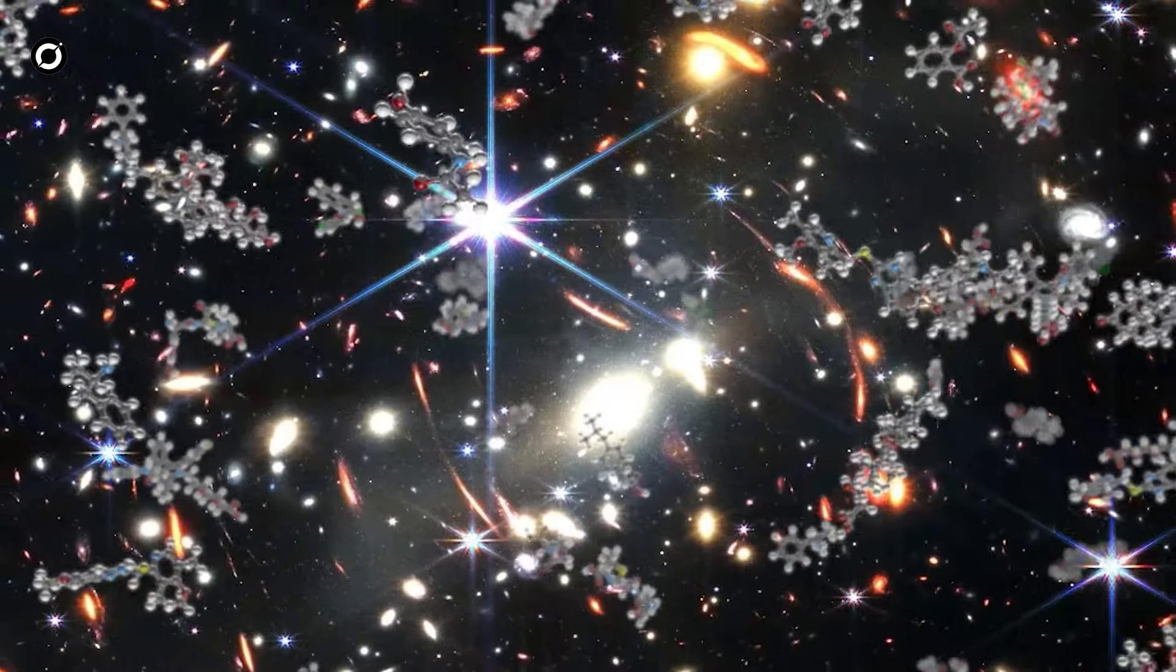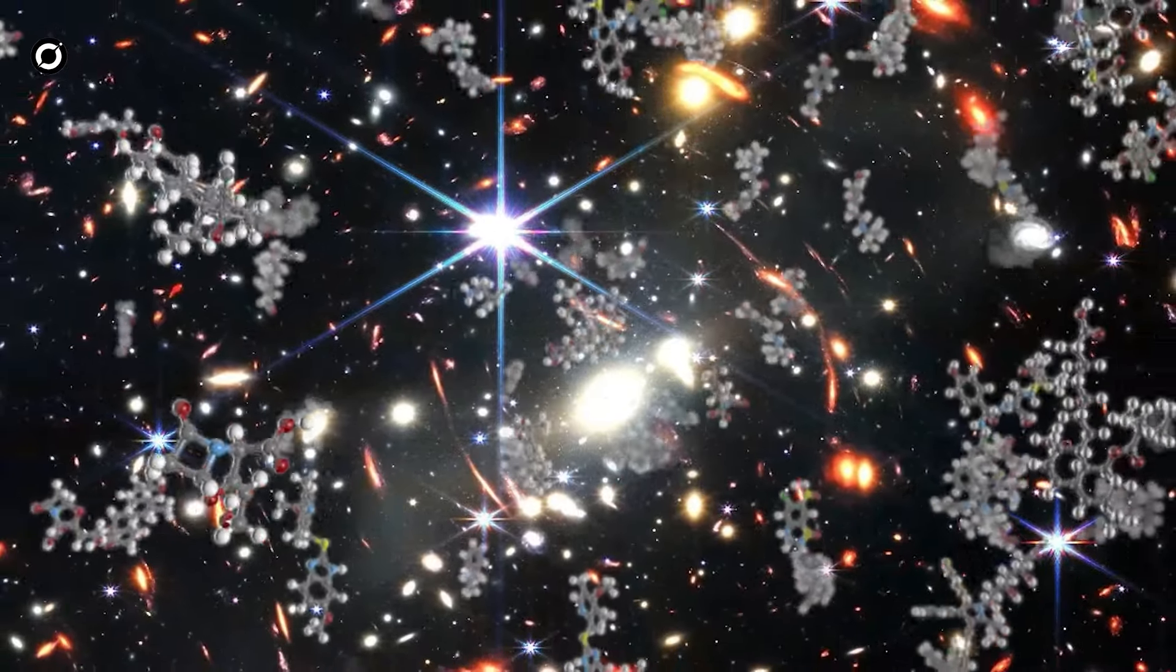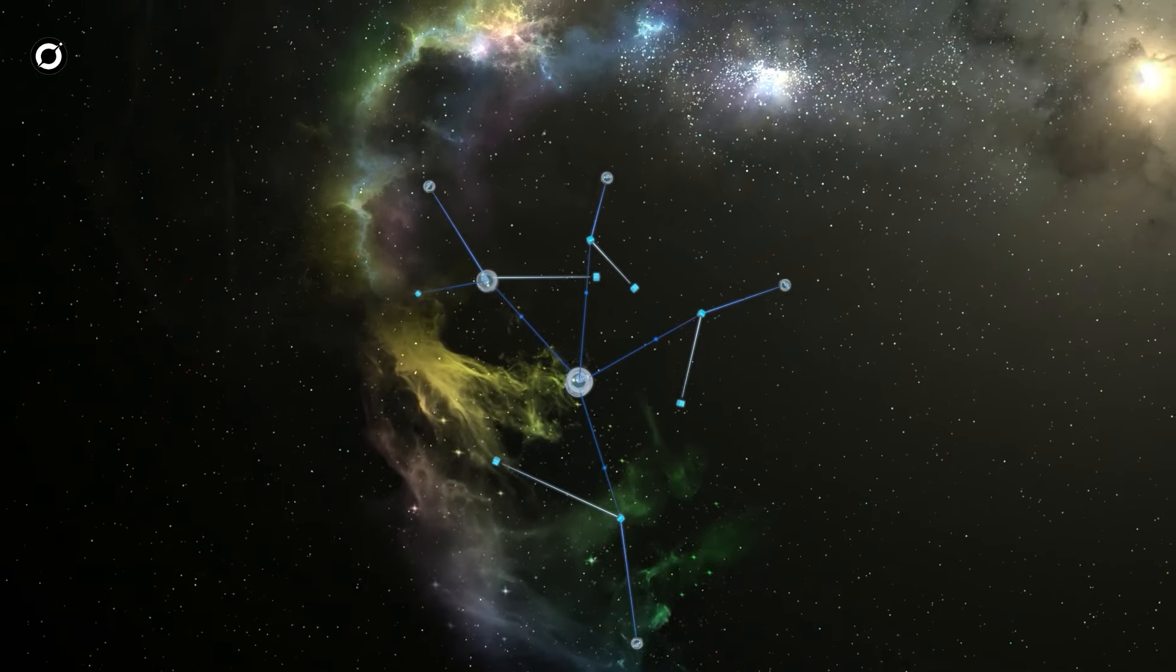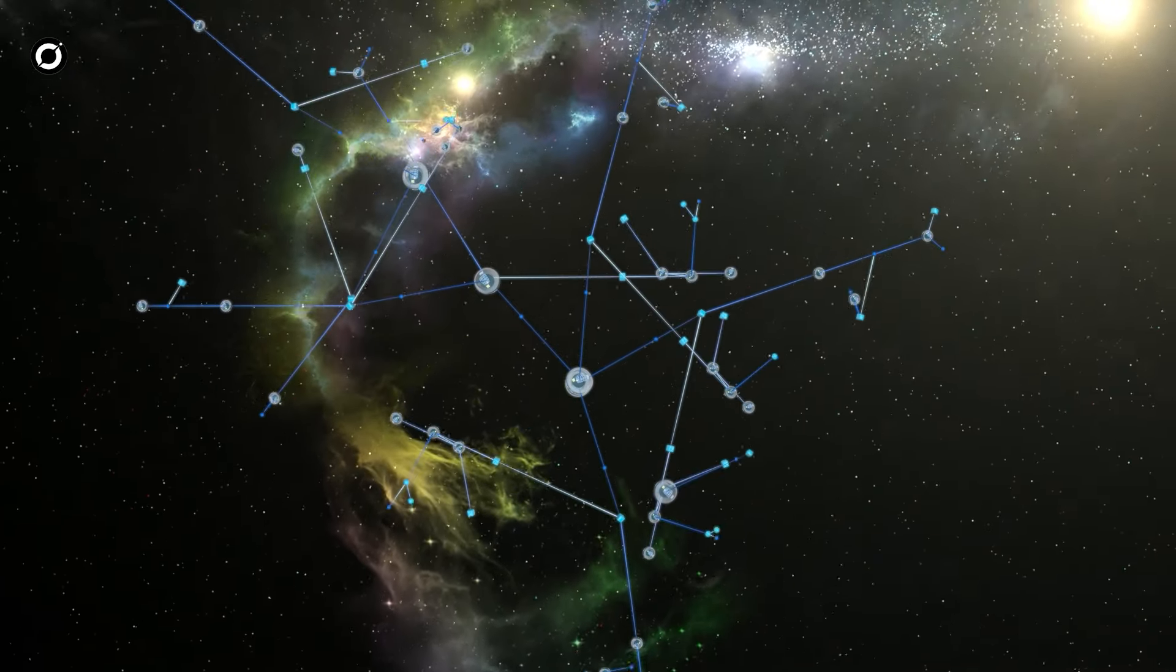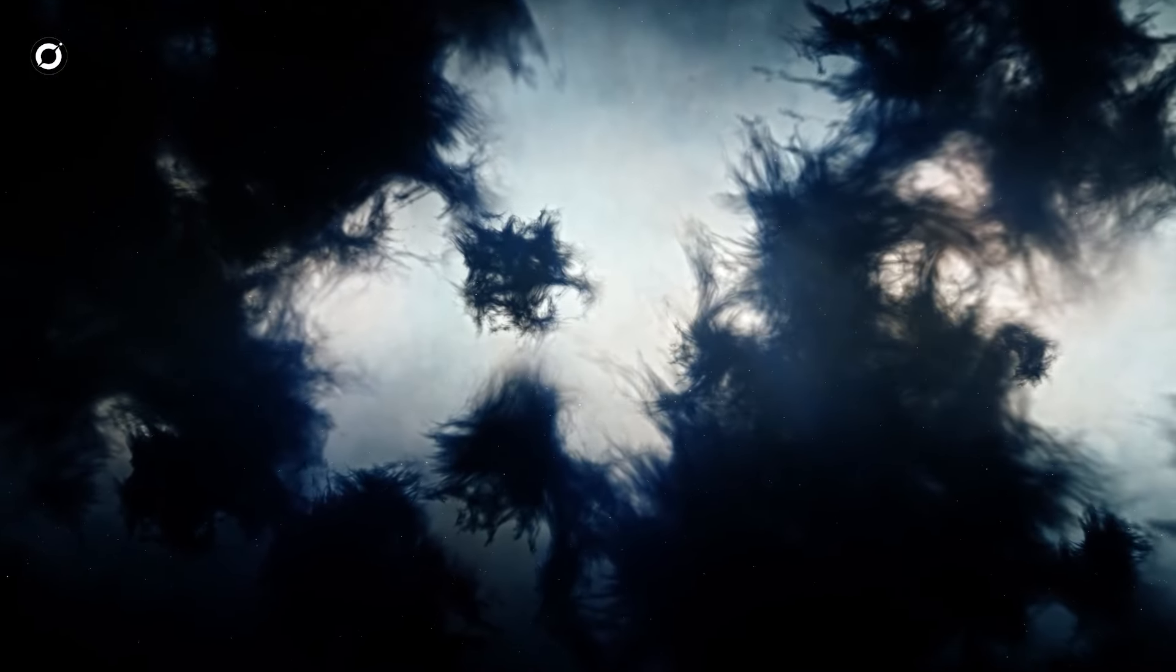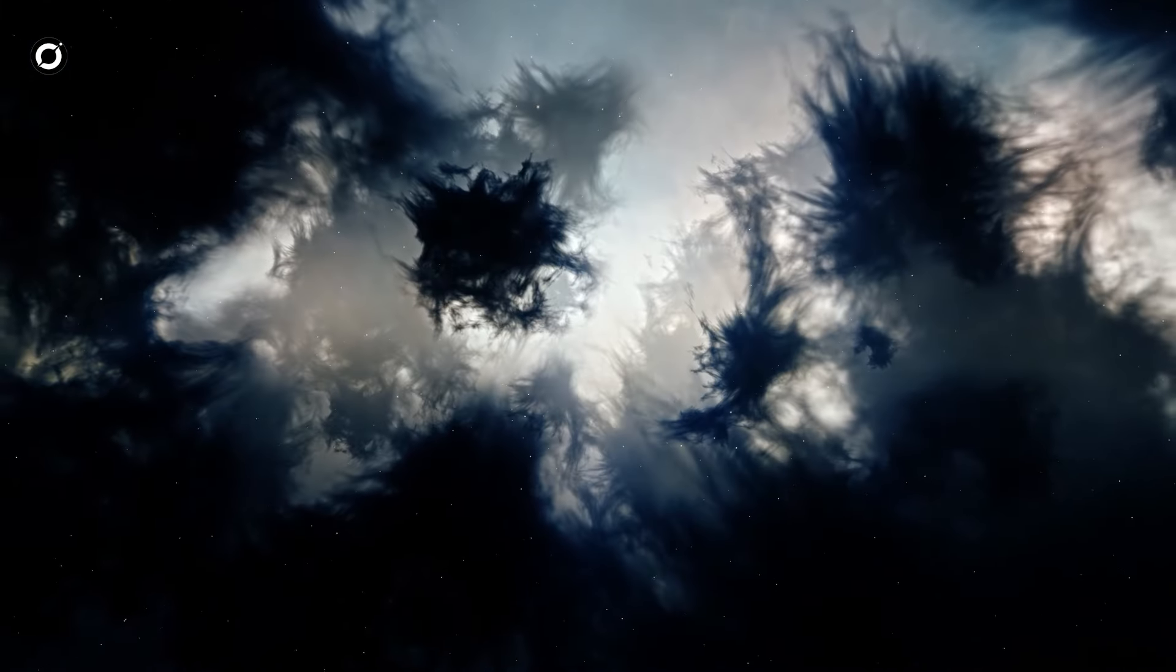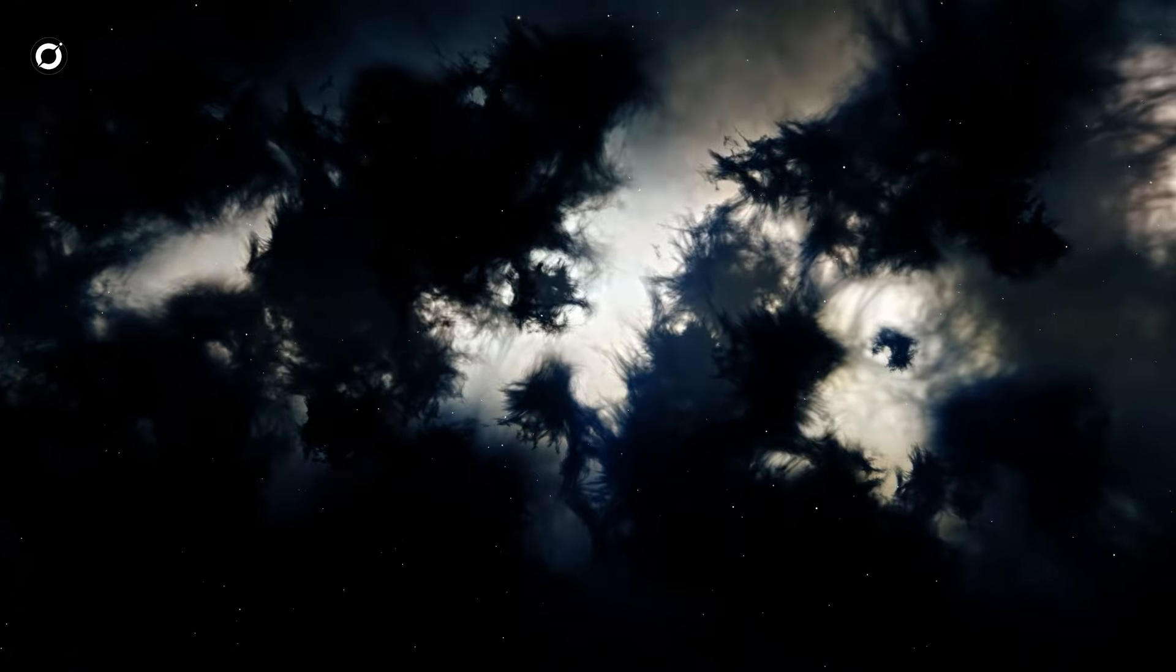The galaxies where they saw the dust are estimated to be somewhere in the region of 10 million years old. That implies there must be a creation and dispersal method for carbon that works on a relatively short time scale.